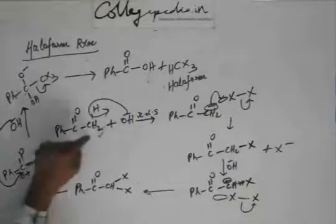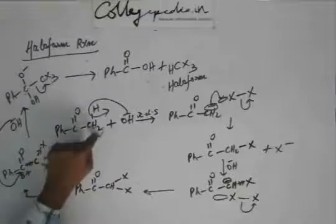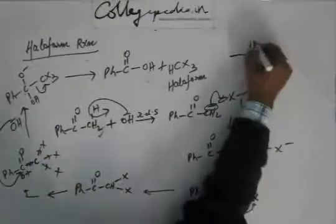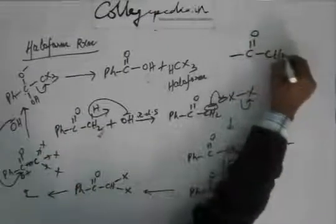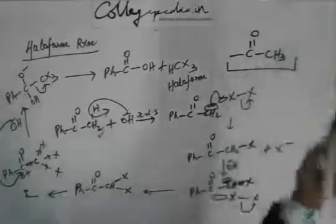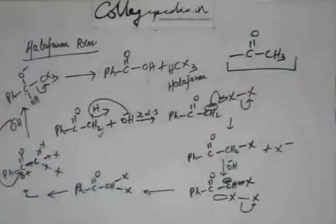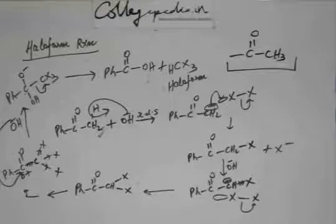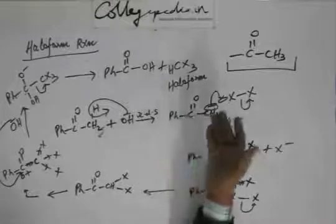So you must be having CH3. This group must be there. You must have C double bond O CH3. If this group is not present, then this haliform reaction will not occur.